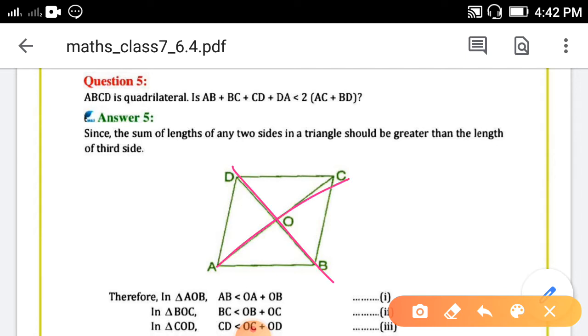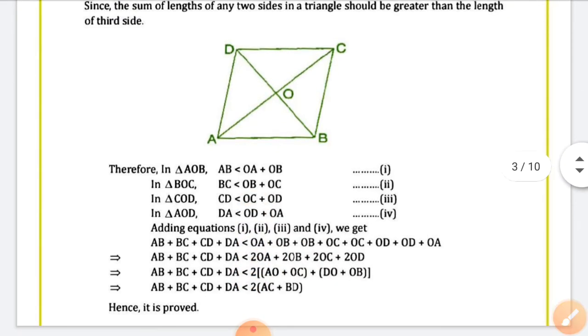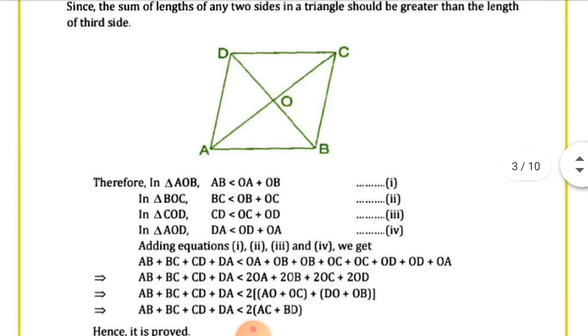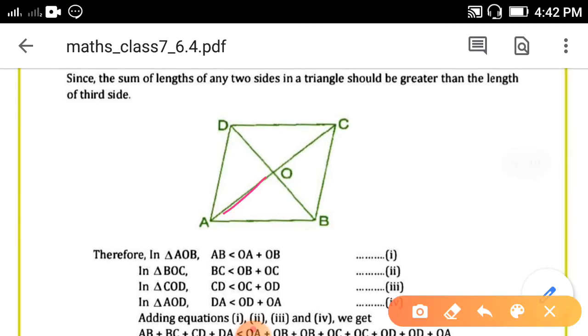Two times the sum of both diagonals. So here you have to consider the triangles one by one - four triangles: that is triangle AOB, then BOC, DOC, and AOD.